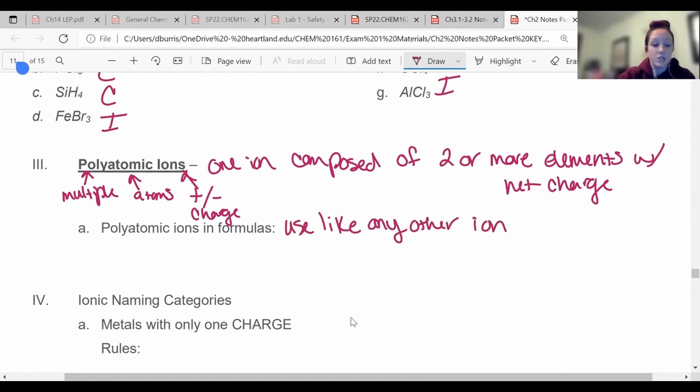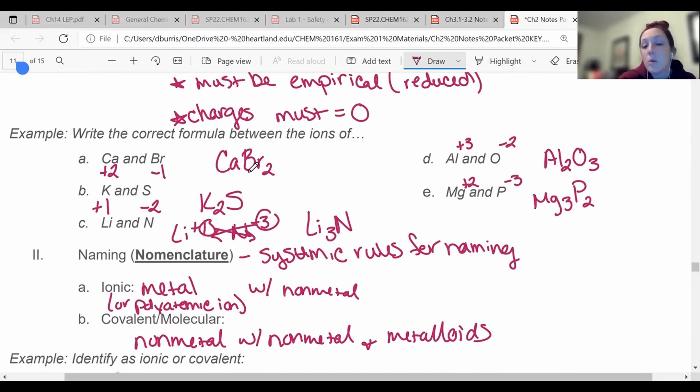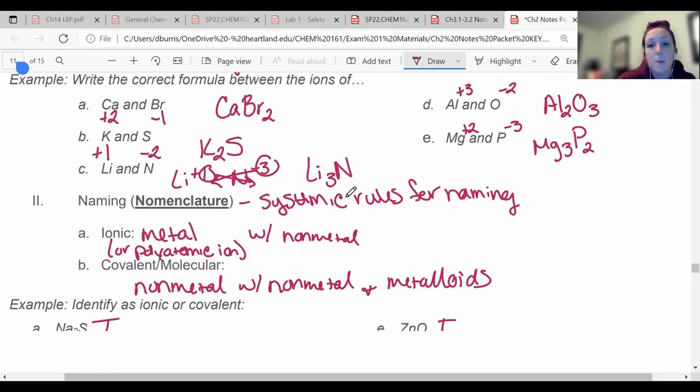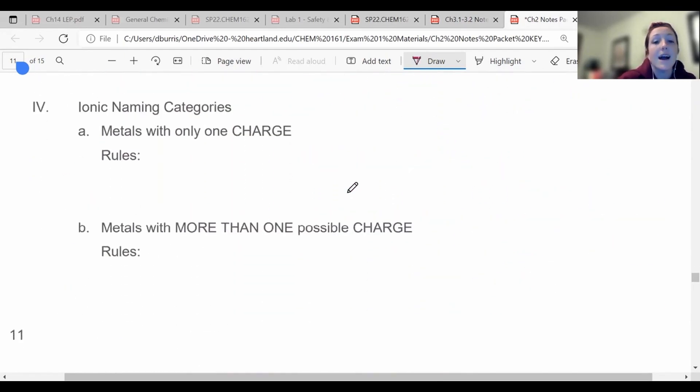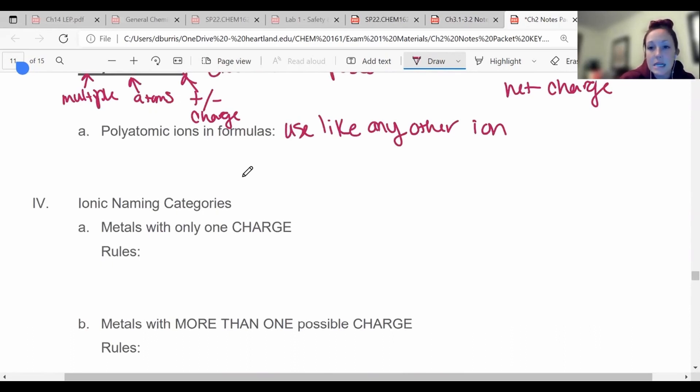So polyatomic ions in formulas, you kind of treat them like any other ion. You're going to use them like any other ion. You still have to balance out the charges, make sure they add to zero, but if you need more than one polyatomic ion, it's going to be a little bit different. So for example, up here I needed two bromines, so I just wrote a little subscript two. Now if you need multiple of a polyatomic ion, since it has multiple things in it, you have to use parentheses. Use parentheses for more than one.